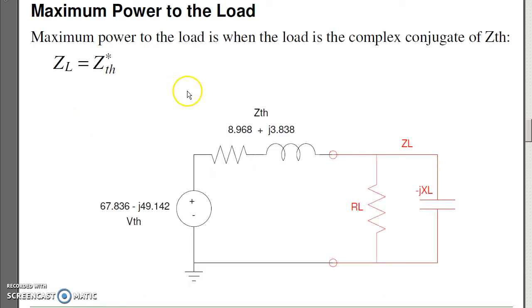Define the max power to the load. It's slightly different than DC. At DC, the load equals the Thevenin impedance. For AC, it's actually a complex conjugate. The reason being is I want to have the real part match up. This will also be 8.968 ohms.